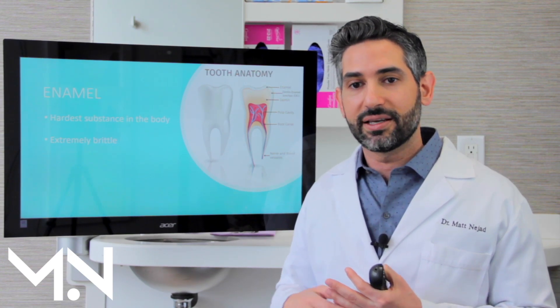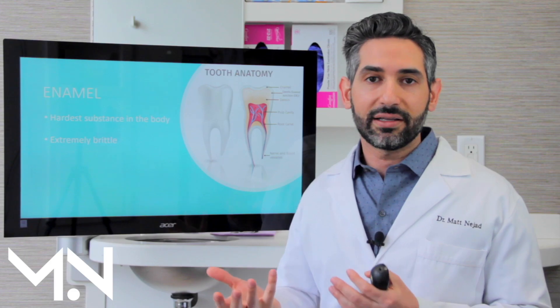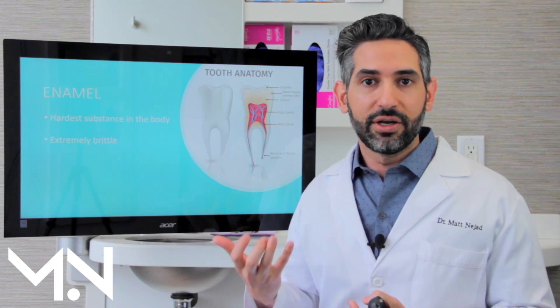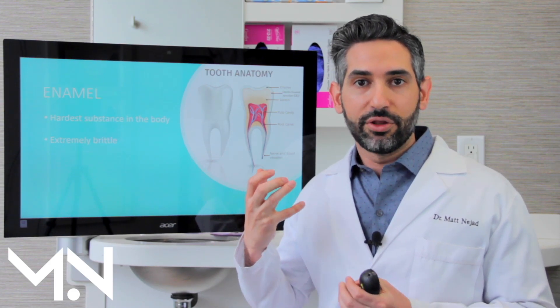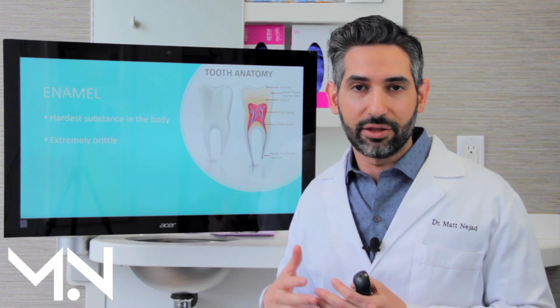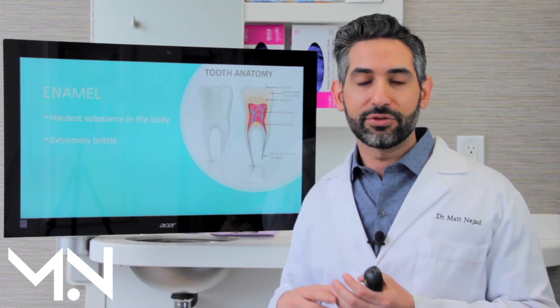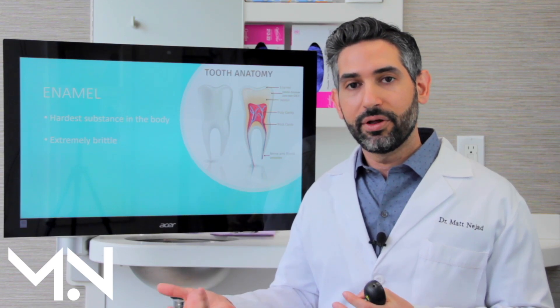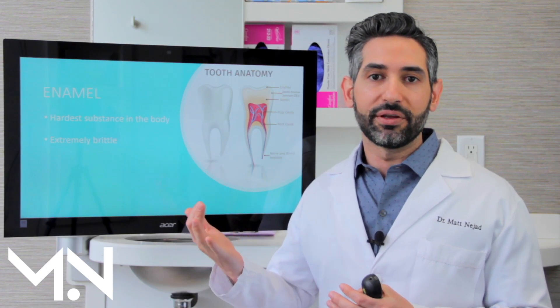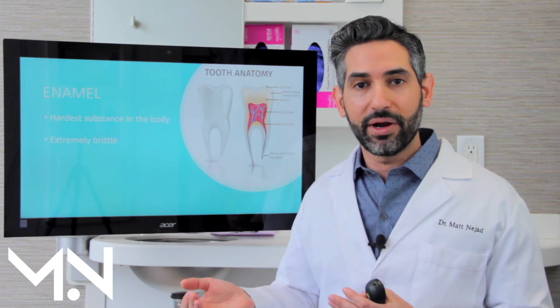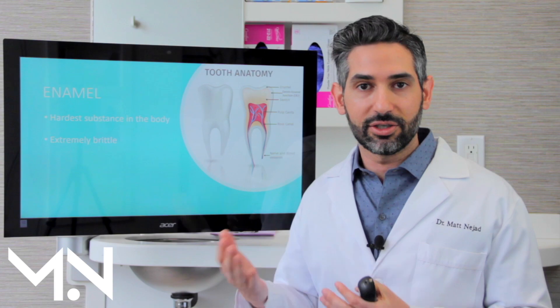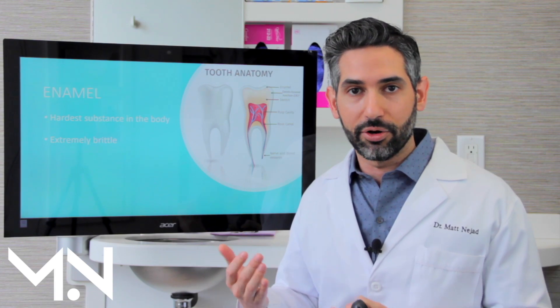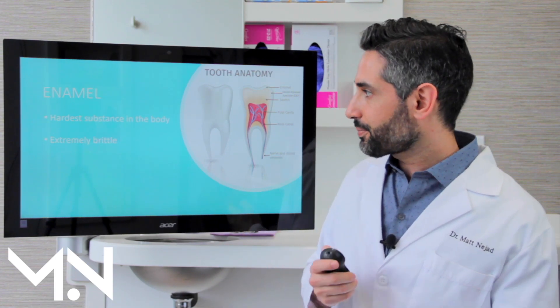Because enamel is brittle, it's likely to fracture if it were the only thing the tooth was made of. So if you had a tooth that was all enamel, it would probably fracture and break way too commonly because it's such a brittle or hard material.